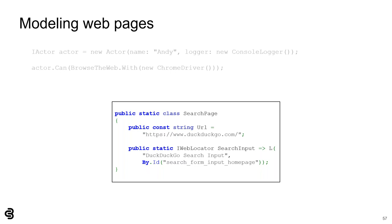A locator has two parts: first, a plain-language description used for logging, and second, a query used to define the element on the page. Boa Constrictor uses Selenium WebDriver's By queries. For convenience, locators can be constructed using the statically imported L method. The screenplay pattern has two types of interactions. The first type is called a task — a task performs actions without returning a value. Examples include clicking an element, refreshing the browser, and loading a page.